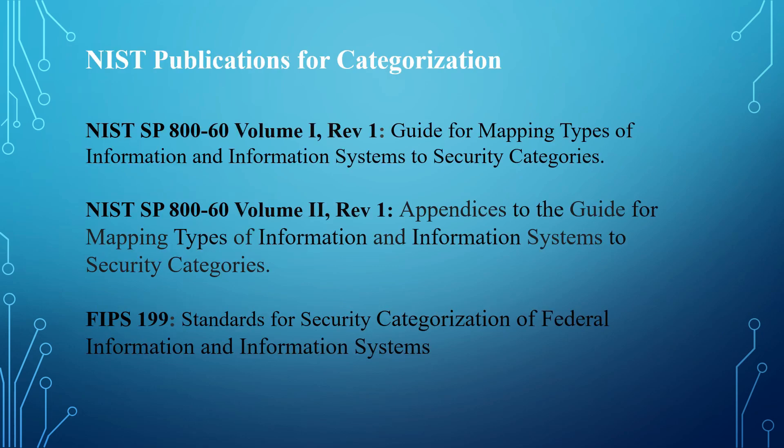The following NIST publications are used as guides for categorizing an information system. The first is NIST SP 800-60 Volume 1 Rev 1, which is the guide for mapping types of information and information systems to security categories.